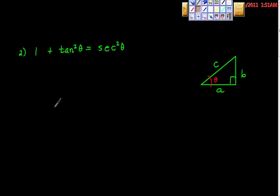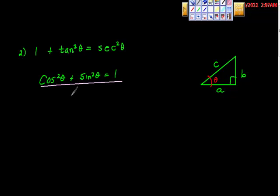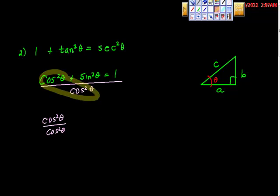Here's the next identity, and you might ask how we get it. That identity is extracted by doing another piece of algebra. We're going to take the first identity we already agreed on and proved — cosine squared theta plus sine squared theta equals 1 — and divide everything by cosine squared theta. That gives us cosine squared theta over cosine squared theta, plus sine squared theta over cosine squared theta, equals 1 over cosine squared theta.